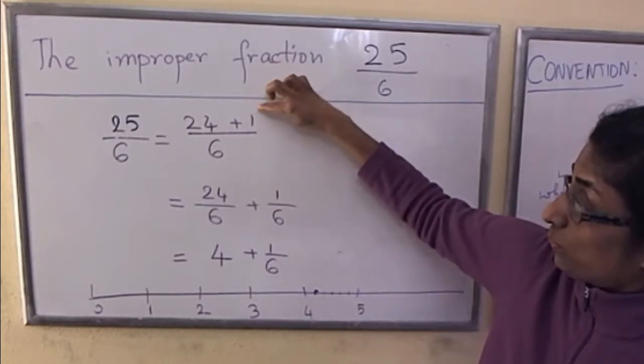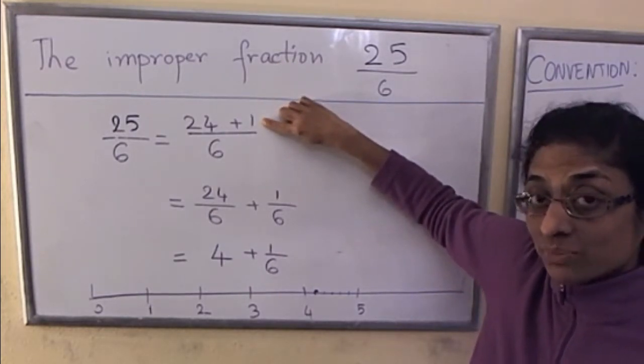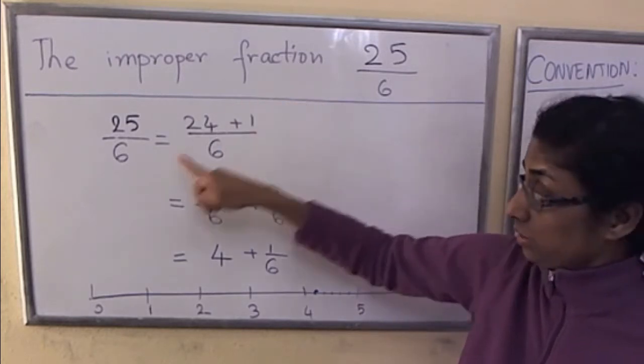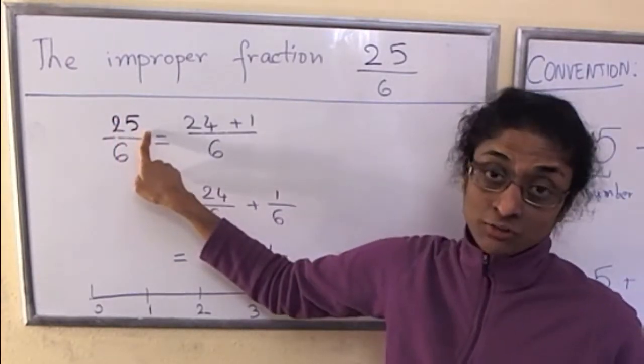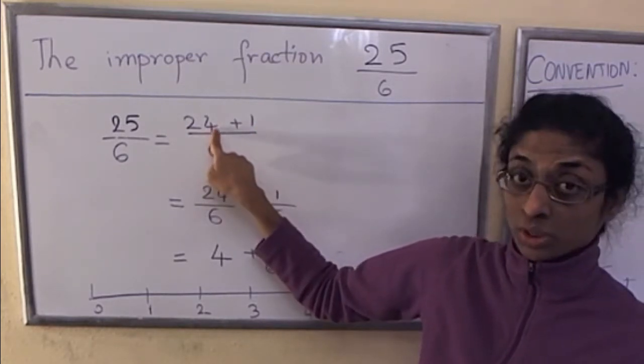If you do it correctly, this number here will always be something smaller than 6. It will be a whole number 0, 1, 2, 3, 4, or 5. It will not be 6 or more, because if it's 6 or more, that means you could have gone up one more multiple.